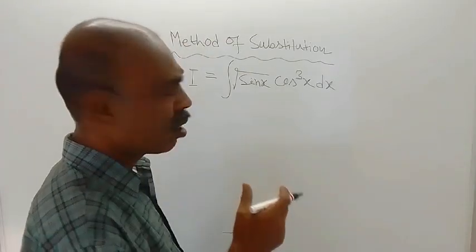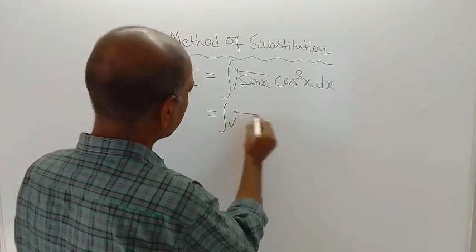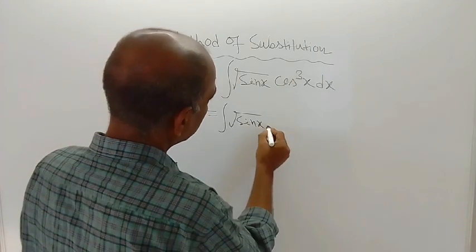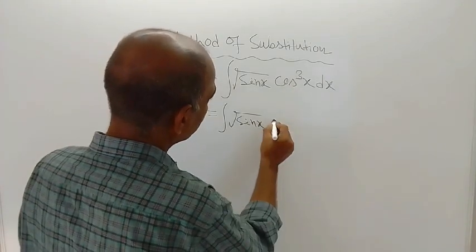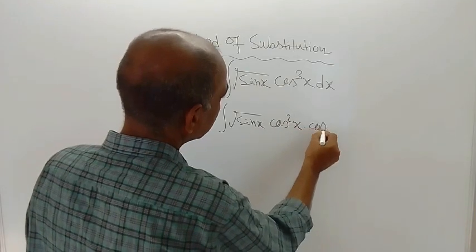The next line you write this way. Root over of sin x is there, then cos cube x is there. You write this way: cos square x into cos x dx.